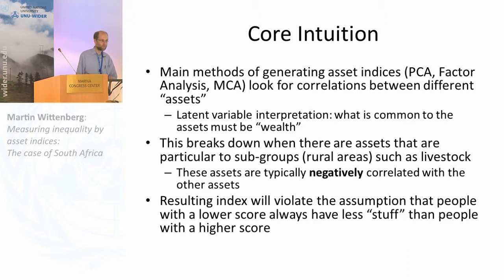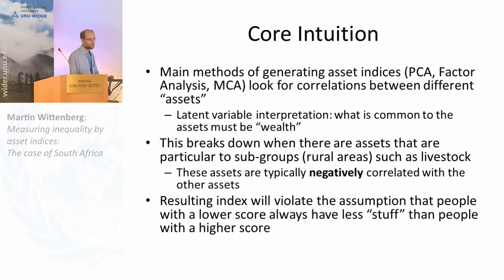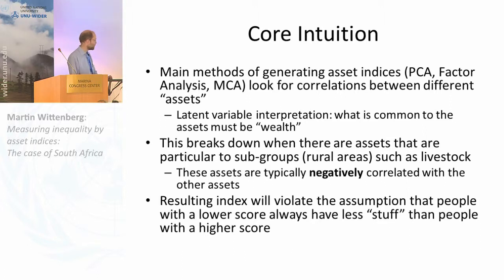The problem with this approach is that it breaks down if there is a subgroup within the population. In South Africa, and in fact a lot of southern African countries, this breaks down in rural areas where people hold assets — particularly livestock — that are not well correlated with the fridges, the cars, the TVs. What typically happens is that those assets actually get a negative score on these asset indices, meaning people who have more stuff, like livestock, end up rating lower on these scores than people who have nothing at all.